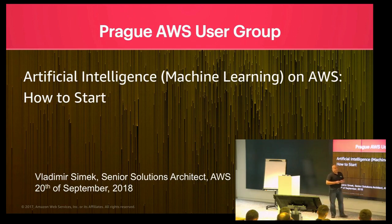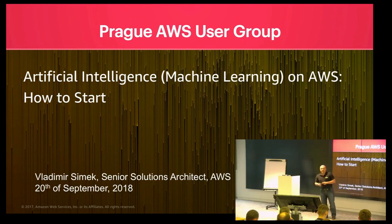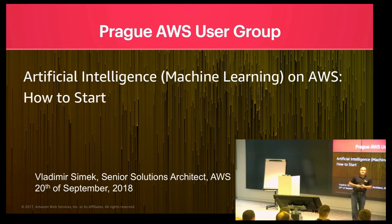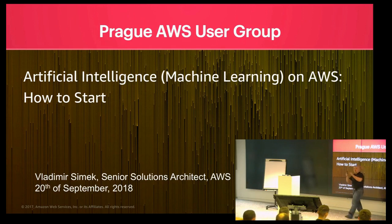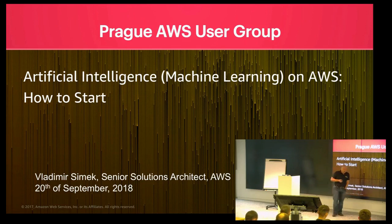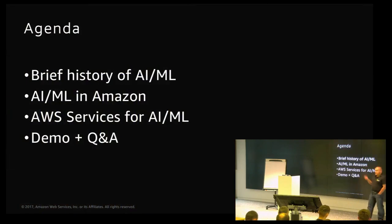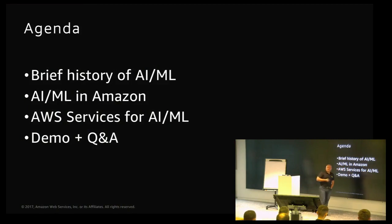First thing: I will use the terms machine learning and artificial intelligence interchangeably. So if there are any definition theorists, you will probably get a heart attack. But don't beat me. Even if you open aws.amazon.com/AI, it will redirect you to aws.amazon.com/machine-learning. And you will see in my presentation why we prefer to use the term machine learning than artificial intelligence.